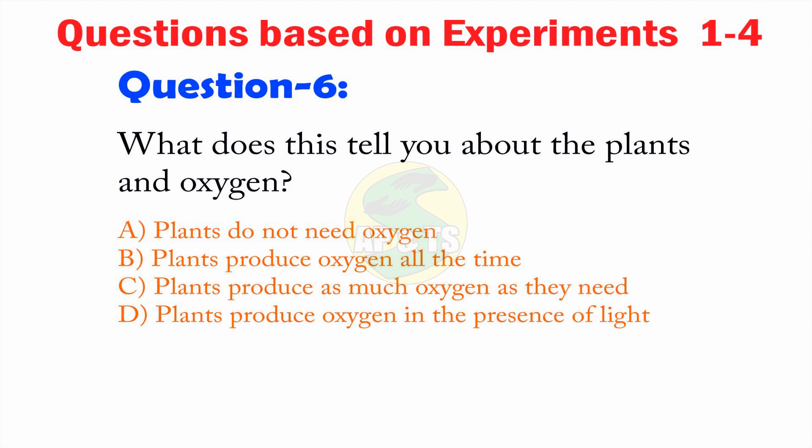Question 6: What does this tell you about plants and oxygen — that is, what is the relation between plants and oxygen? A — Plants do not need oxygen, B — Plants produce oxygen all the time, C — Plants produce as much oxygen as they need, D — Plants produce oxygen in the presence of light. What is your answer?